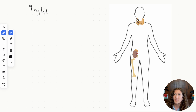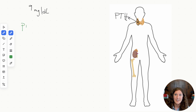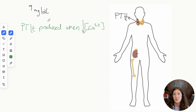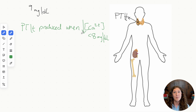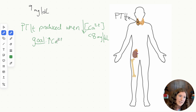When calcium levels are low — say below 8 mg/dL — our body recognizes this and the parathyroid glands release PTH. PTH is a peptide hormone, so it binds to receptors and triggers second messenger signals. The goal of PTH is to increase calcium levels, and it does this in a couple of different ways.